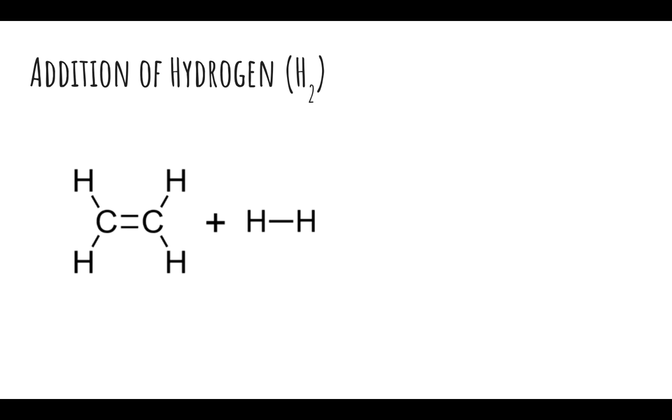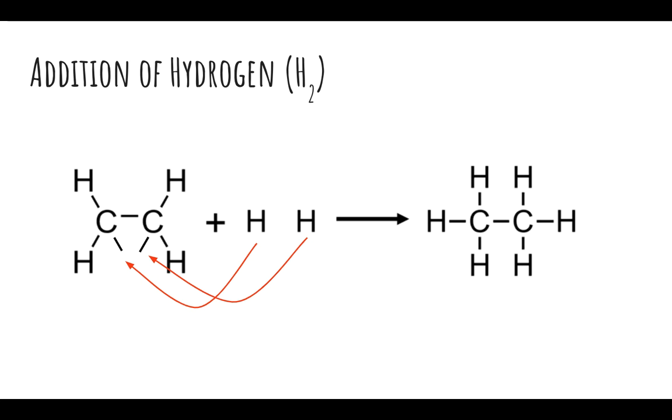The first is the addition of hydrogen, or H2. One of the bonds in the double bond breaks apart, and then the bond between the two hydrogen atoms breaks. Each hydrogen atom adds onto a carbon atom, giving us the corresponding alkane. So there's the overall reaction: the alkene plus the hydrogen gives us the alkane with only single bonds.